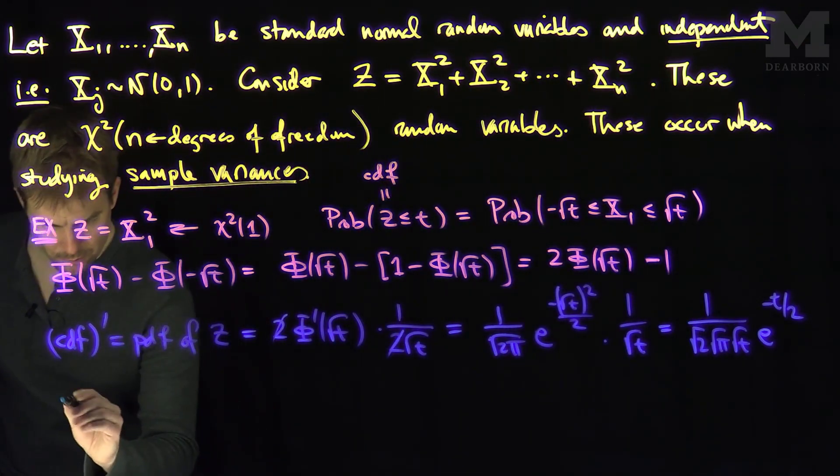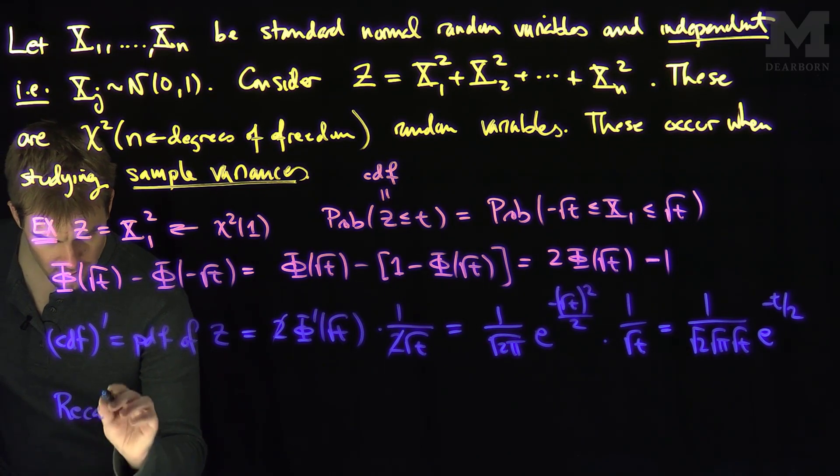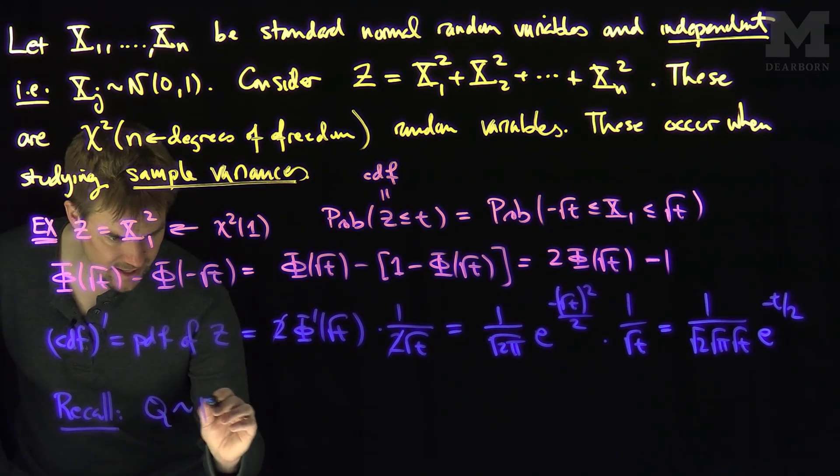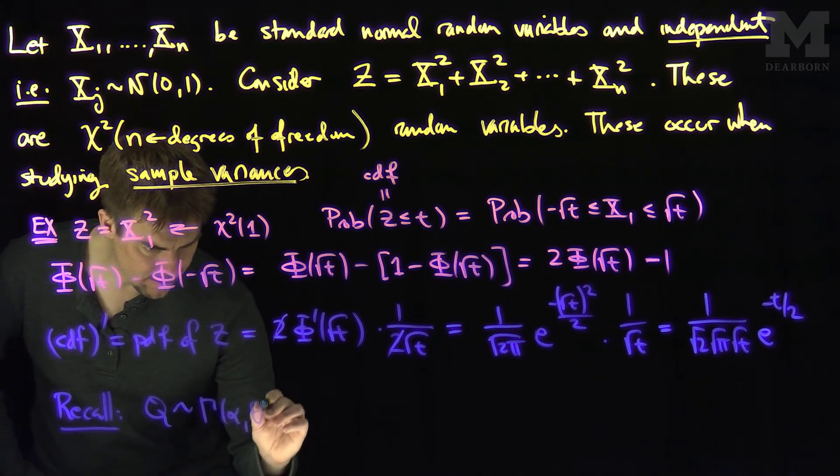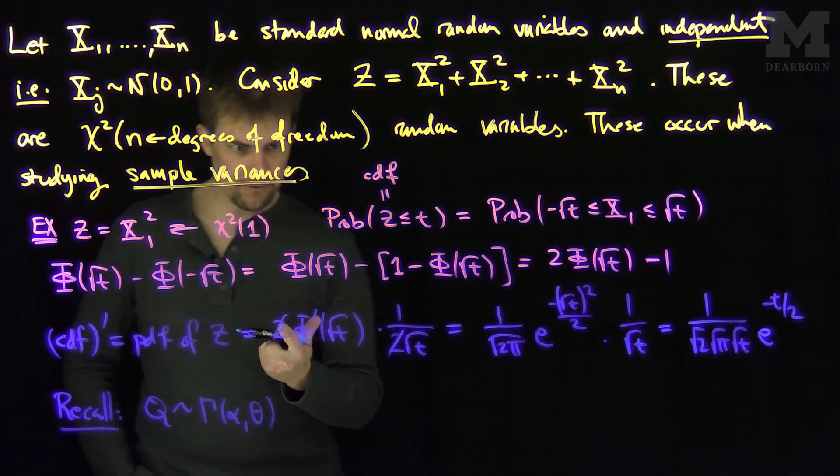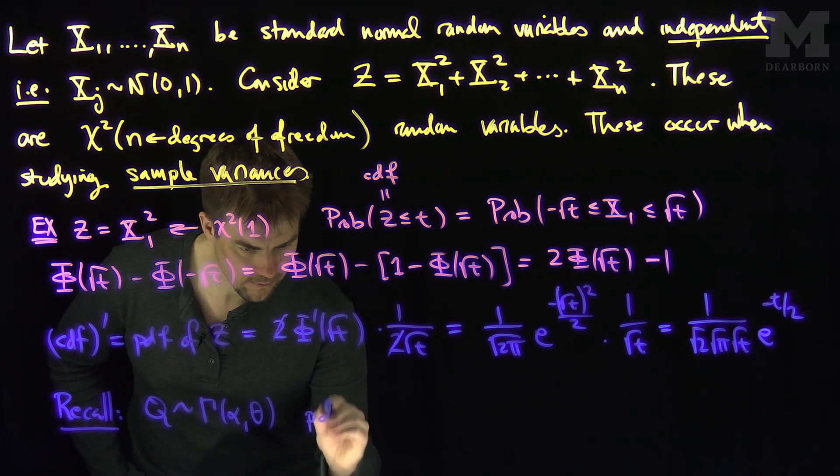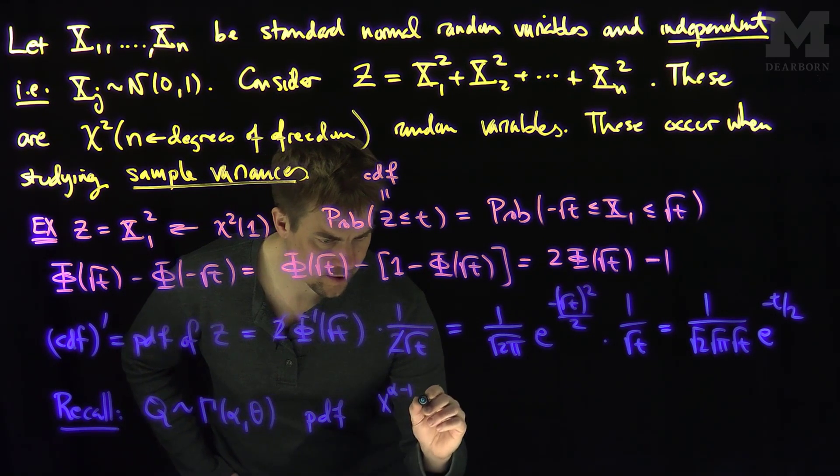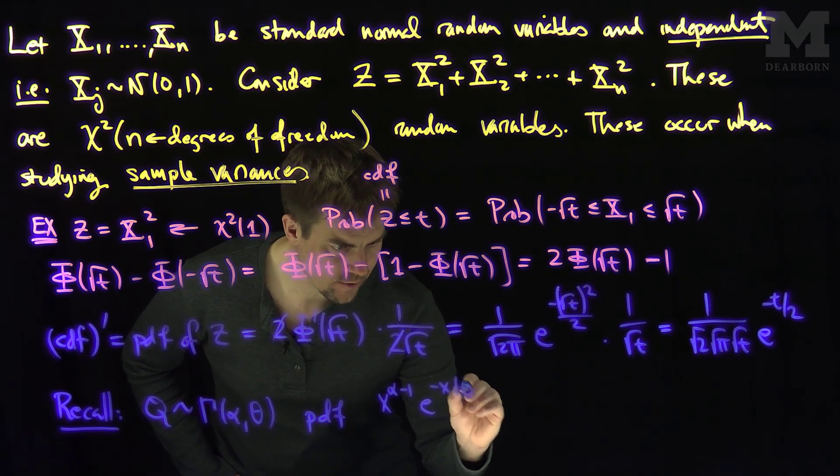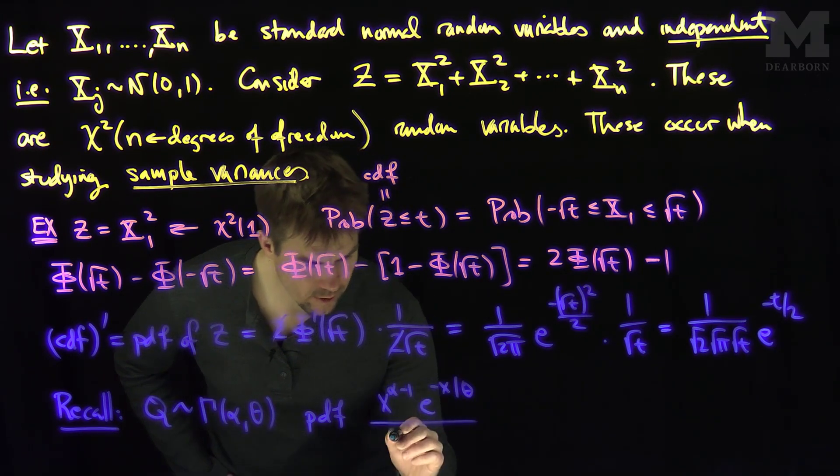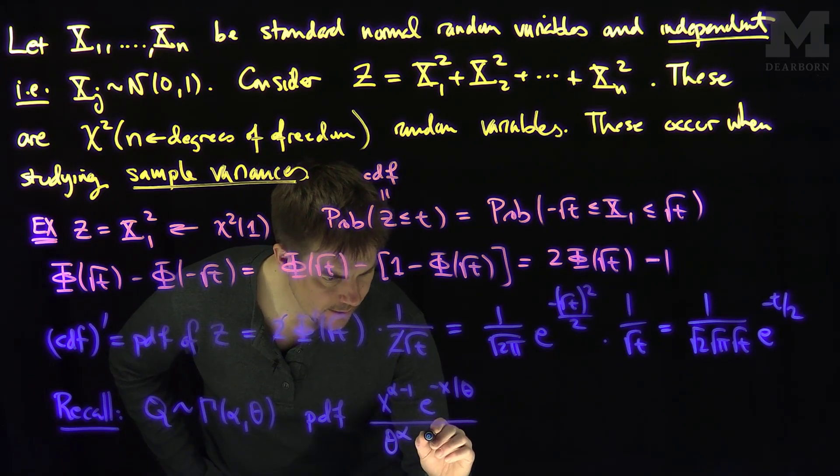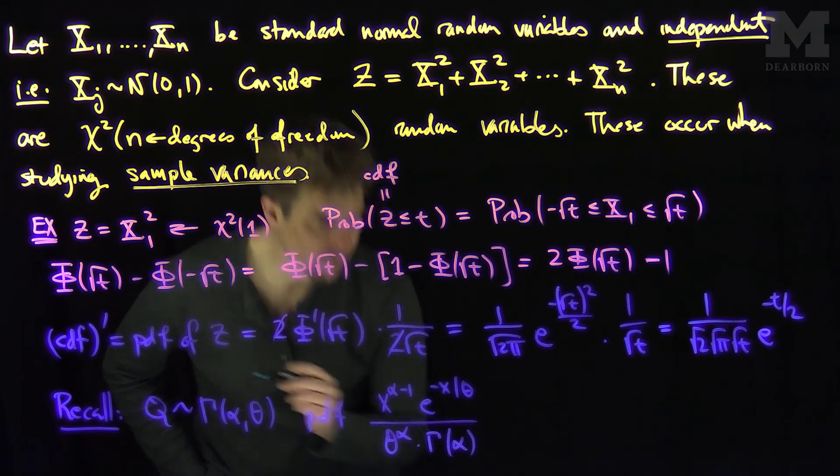Let me remind you, so recall that a random variable q is in the class gamma alpha and theta if its PDF has the form x to the alpha minus one, e to the negative x over theta, over theta to the alpha, and then times gamma of alpha.